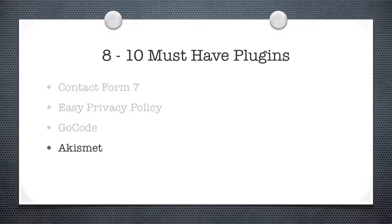Next is Akismet. This is installed by default but not activated by default. You need to create a WordPress.com account — not a blog, just an account — to get your API key, which is a unique string of digits. Plug that into the Akismet settings in your dashboard and you're done. Akismet will make your life so much easier — without it you can get a thousand or more spam comments daily. I've had 35,000 spam comments in a few months and never see them because Akismet knocks them out.